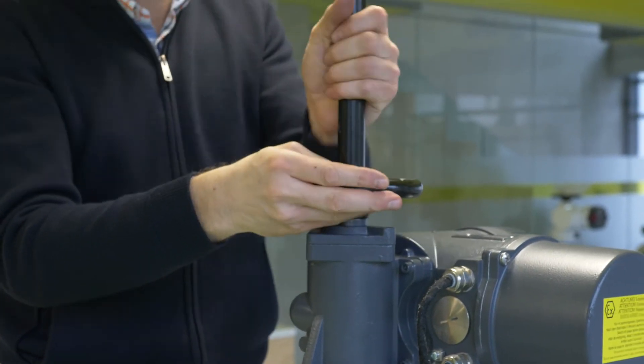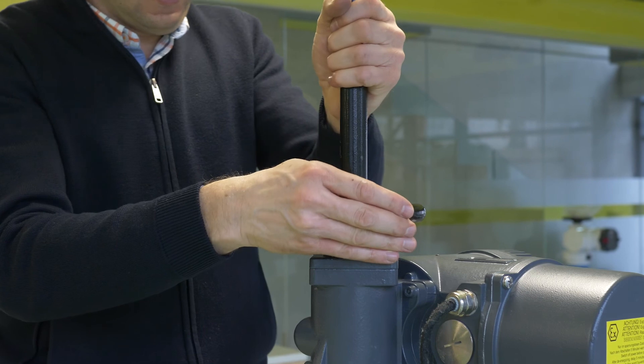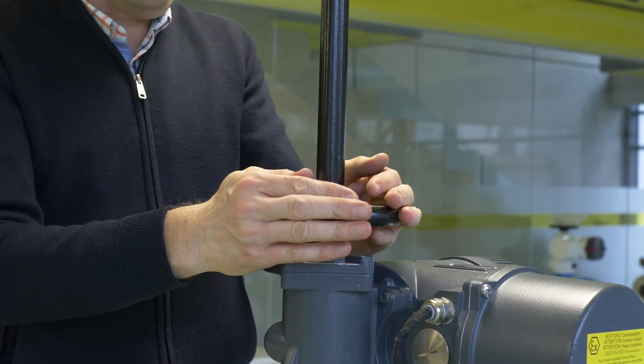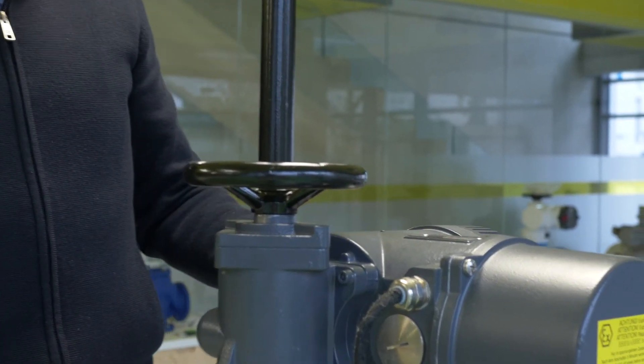Okay, now the cover tube is tightened and we have finished the change of the handwheel group for a CM actuator.